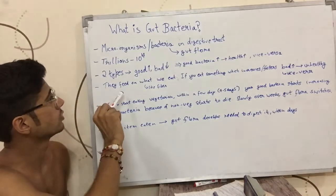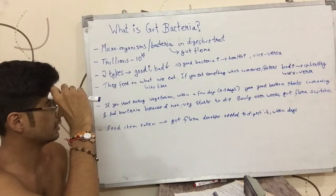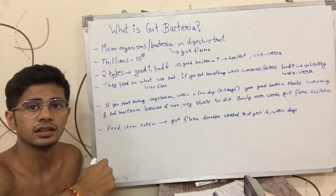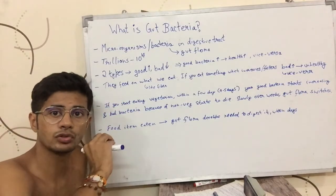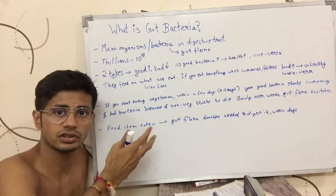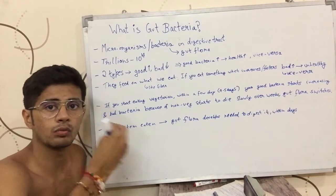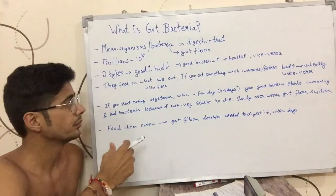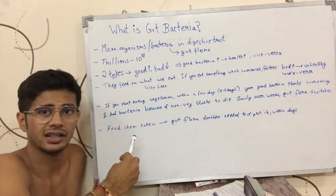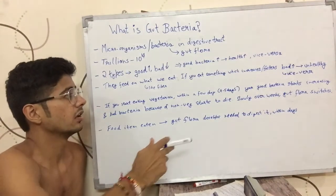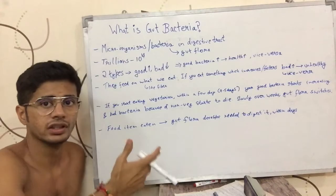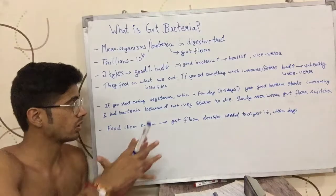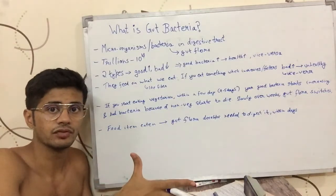These bacteria in our gut feed on what we eat. So what sort of bacteria will foster will depend on what you are eating. For example, if you start eating vegetarian, within a few days — like 4 to 5 days or a bit more — your good bacteria starts to increase.